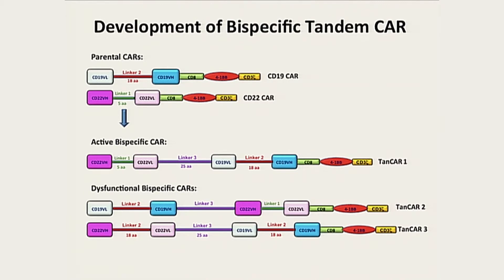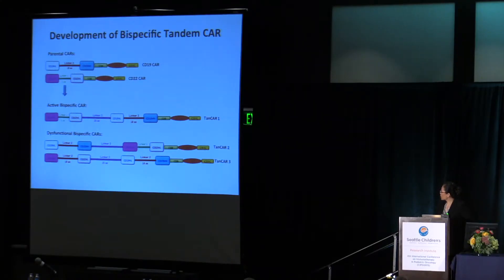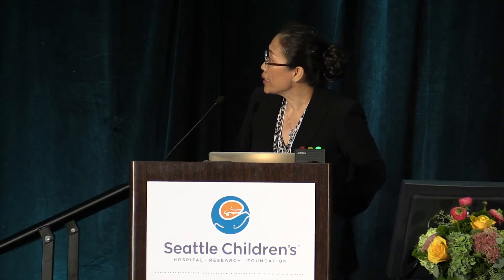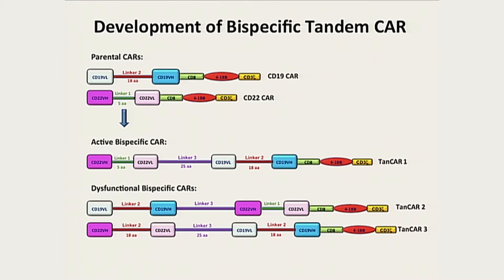These are several constructs we have made. Interestingly, the only functional one is the one with the CD22 binding domain located further from the membrane — that is TanCAR1. When we switch the order of CD19 and CD22 binding domains, as in TanCAR2, the CAR does not work. Even more surprisingly, when we replace the linker in the CD22 binding domain region, as in TanCAR3, the CAR also does not work.